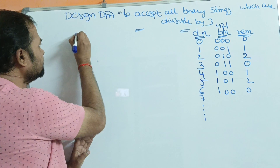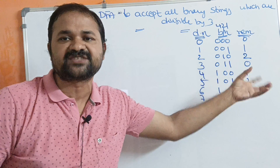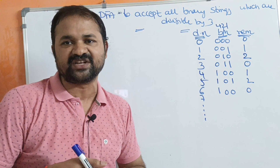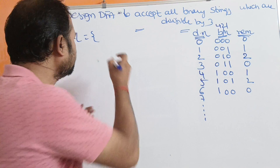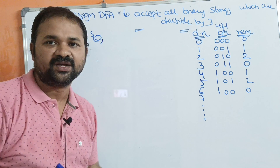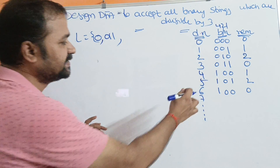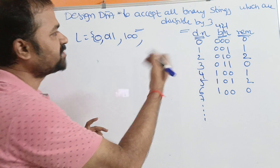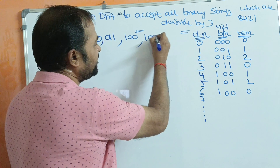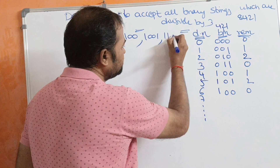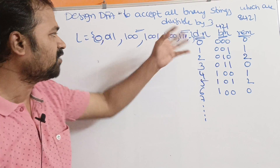Now let us write the language. L equals the set of all binary strings divisible by 3 — that is, multiples of 3: 0, 3, 6, 9, 12, 15, and so on. In binary notation: 0 can be written as single 0, double 0, or triple 0; 3 is 011; 6 is 110; 9 requires 4 bits — using 8-4-2-1 notation, it is 1001; 12 is 1100; 15 is all 1s. We can have any number of such strings, and for all of these we have to design the DFA.